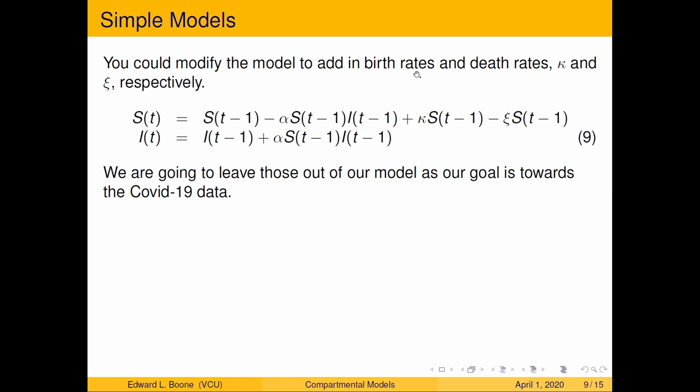You can add things to the model if you wanted to. You could add things like birth rates and death rates. Here, kappa would be the birth rate. Here, xi would be the death rate. But for right now, we're going to leave these out of our model because we're trying to keep things simple. And the short period of time that the COVID virus is out, there's probably not going to be a lot of change in the actual size of the population. So the population isn't going to get a lot larger.